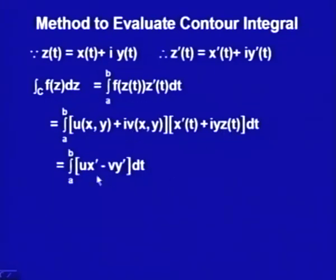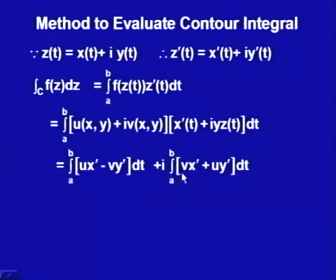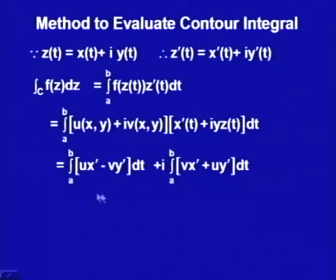Continuing with contour integration, substituting f(z(t))·z'(t) we get [v·x' + u·y'] plus i times [v·x' + u·y']. Since u, v, x, and y are all real, we can treat this as real integrals and use the properties of definite integrals to break it into two integrals.